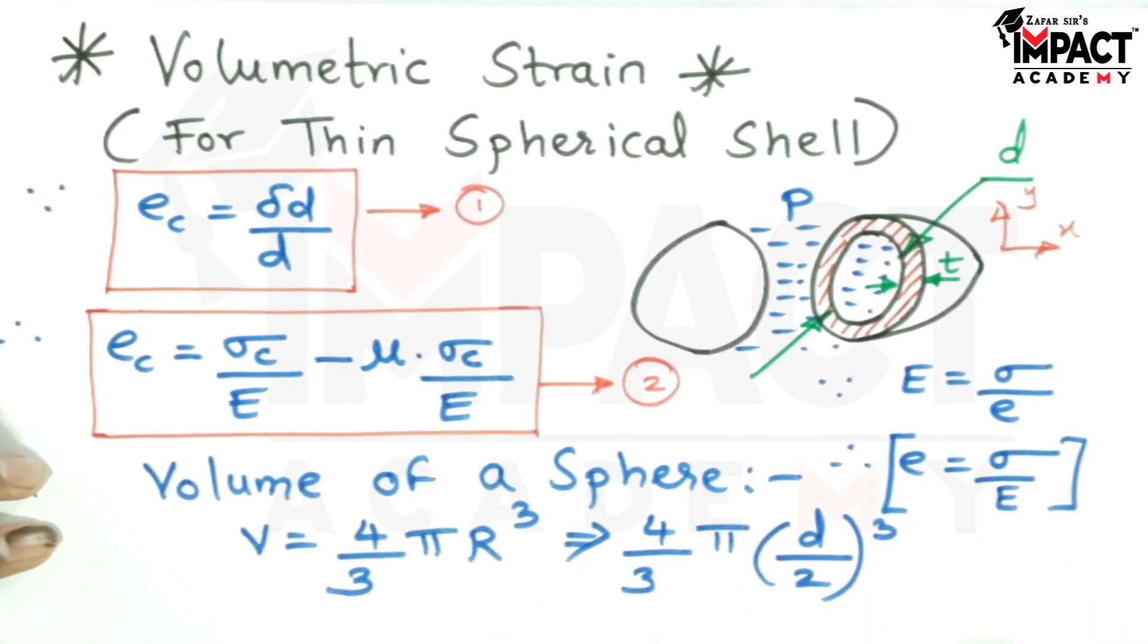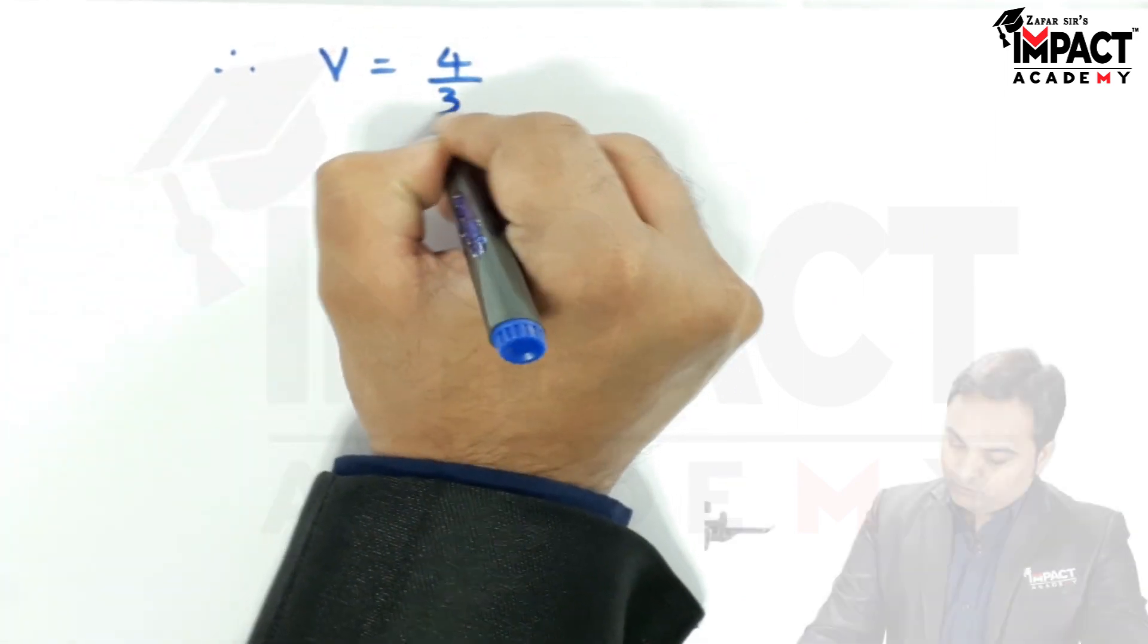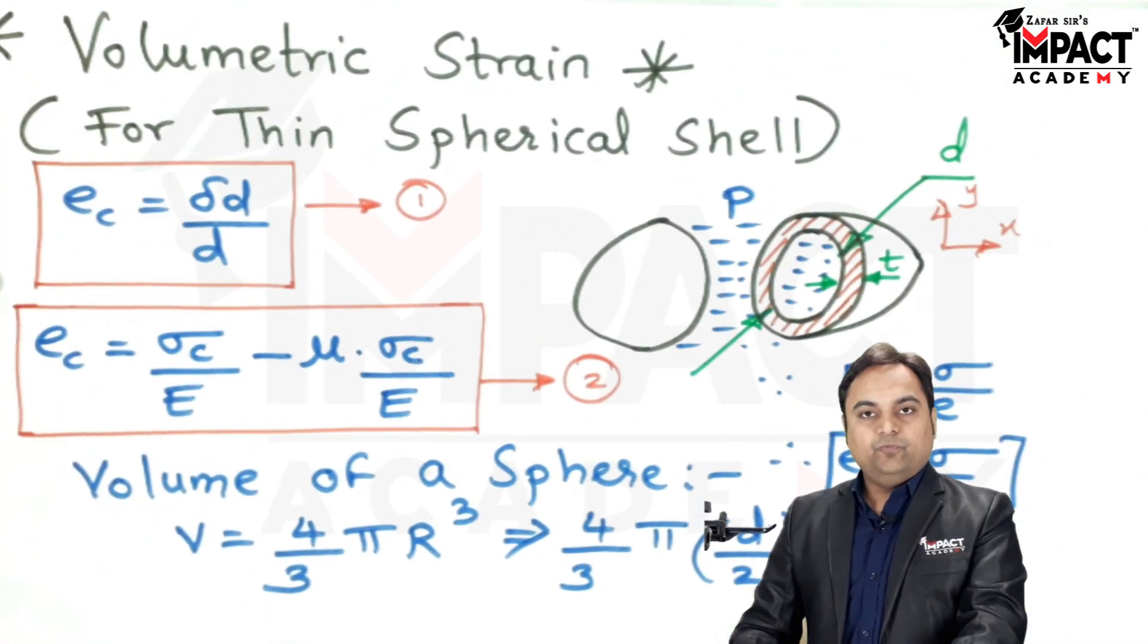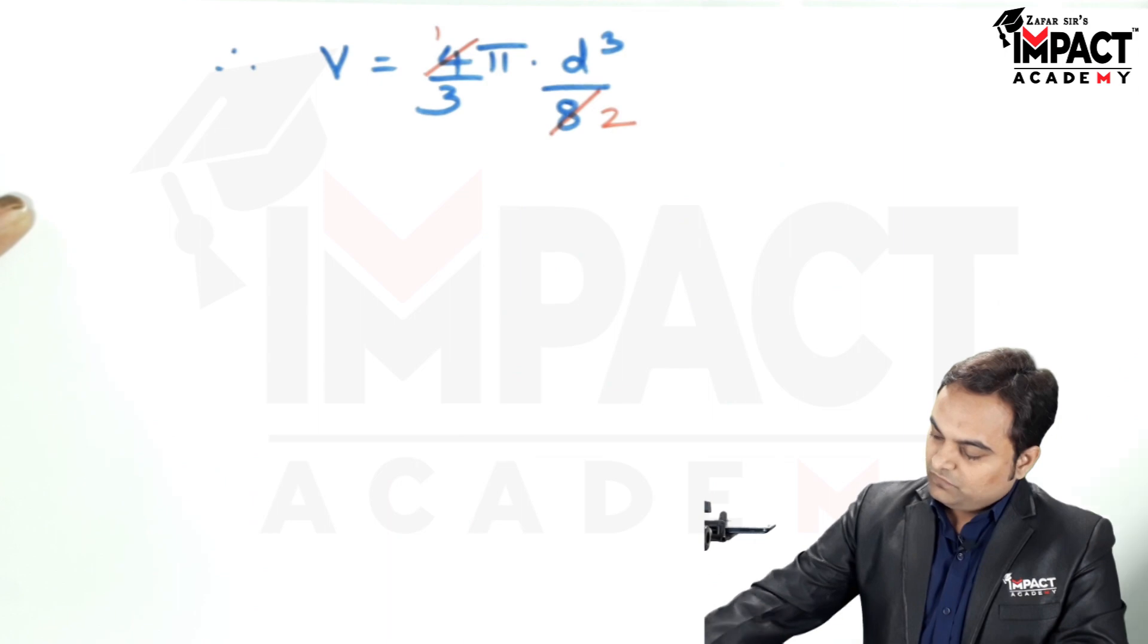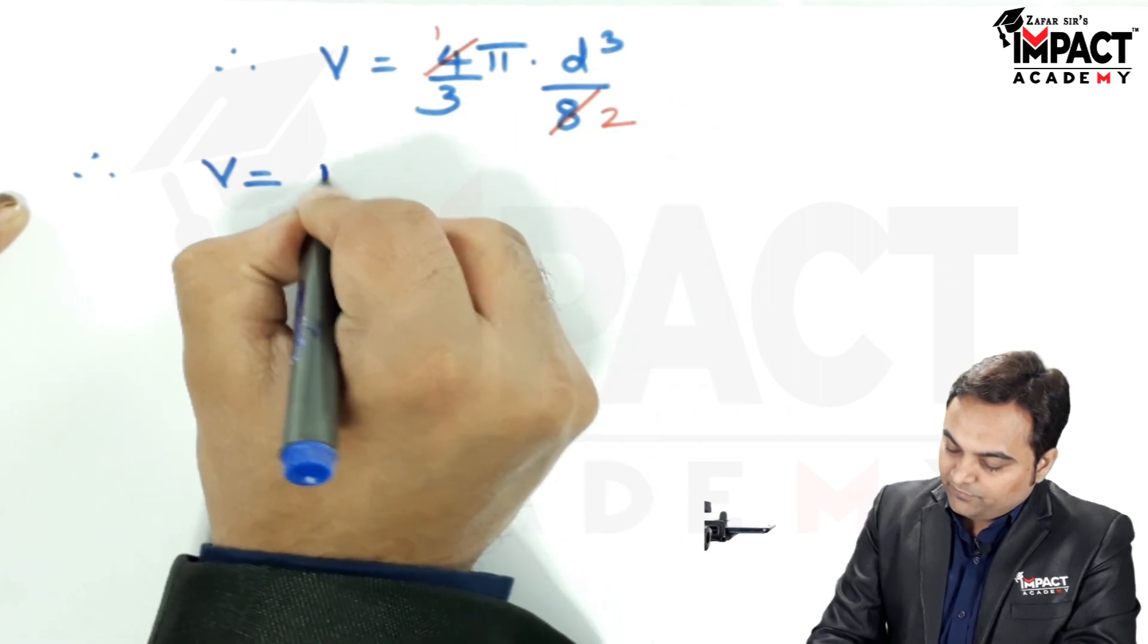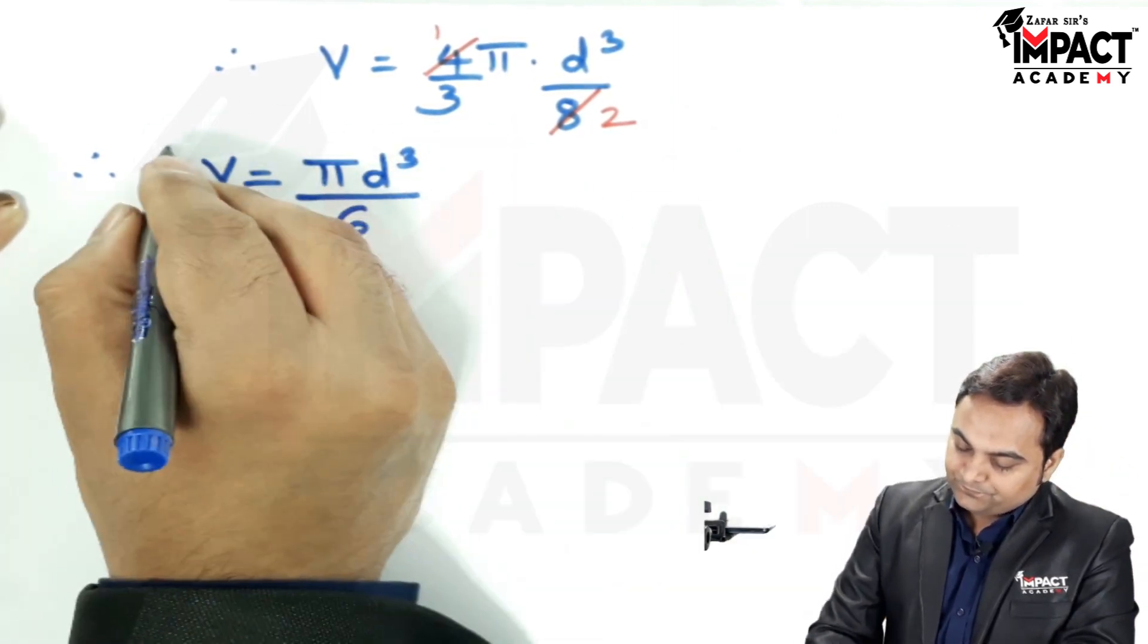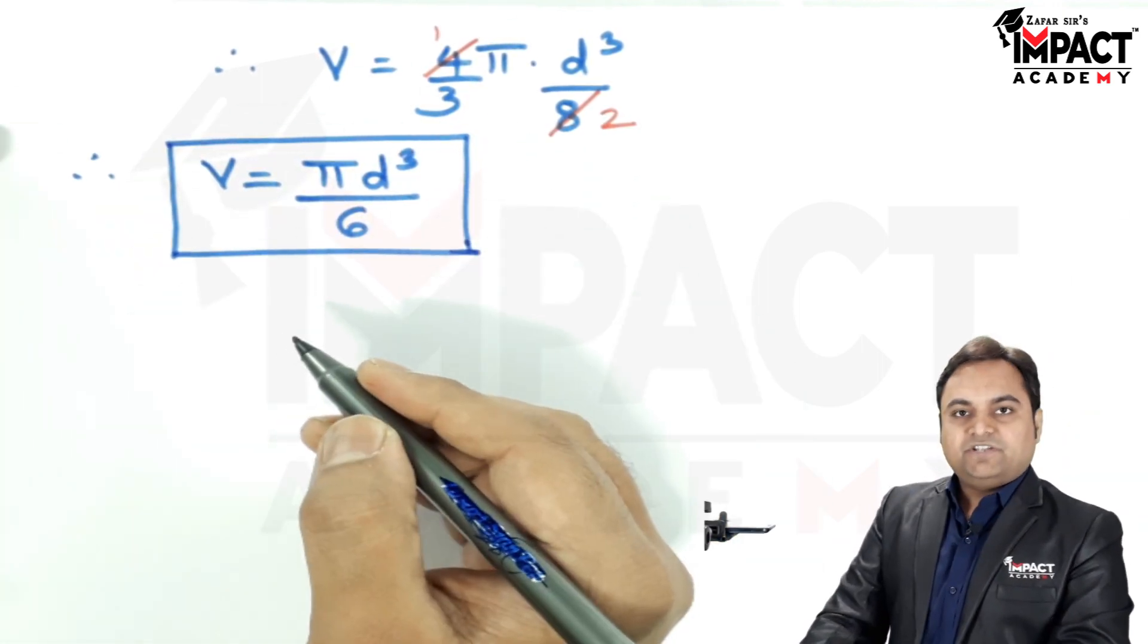So, this would be 4 upon 3, Pi, D cube and here we have 2 cube, which would be 8. So, after the cancellation, therefore the volume of sphere, in the form of diameter, it comes out to be Pi D cube by 6.